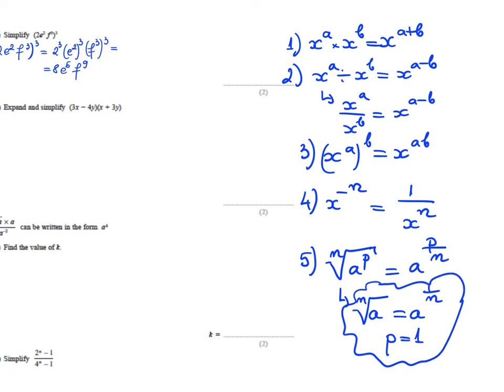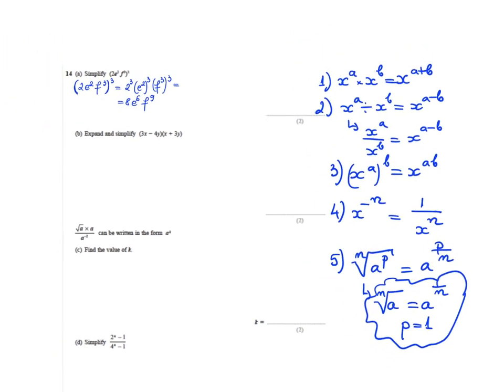See how in this example I use rule number 3. Whenever I have a problem on indices, I start by writing the five rules so that it's clear every time what rule I apply.